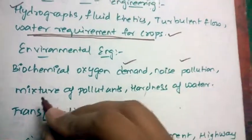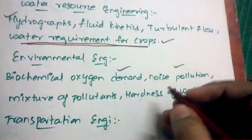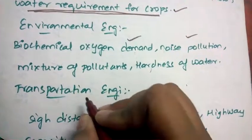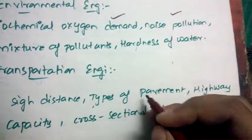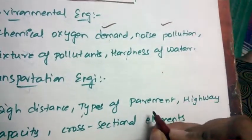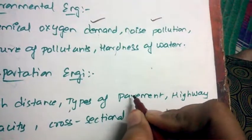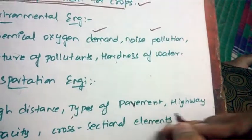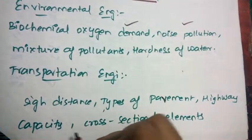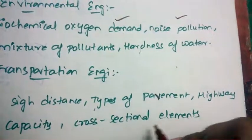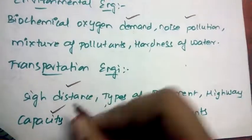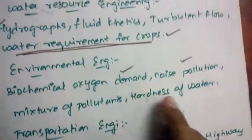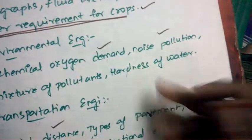Coming to transportation engineering: side distance, types of pavement, highway capacity, and cross-sectional elements — out of which side distance and highway capacity, concentrate more on these. And coming to hardness of water, you can expect mostly previous paper-type questions, so concentrate on previous papers and keep solving them continuously.